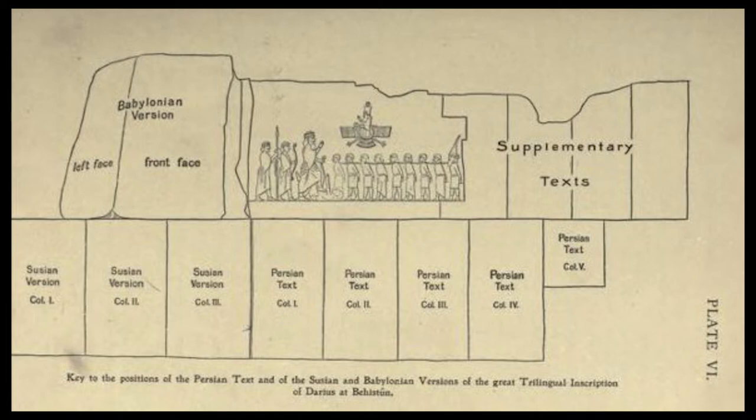The inscription is to cuneiform what the Rosetta Stone is to Egyptian hieroglyphs — the document most crucial in the decipherment of a previously lost script. Authored by Darius the Great sometime between his coronation as king of the Persian Empire in the summer of 522 BC and his death in autumn of 486 BC, the inscription begins with a brief autobiography of Darius, including his ancestry and lineage.